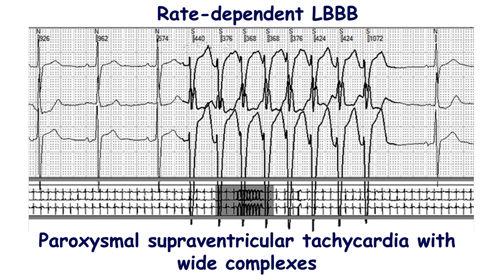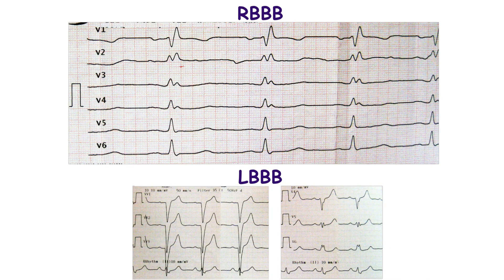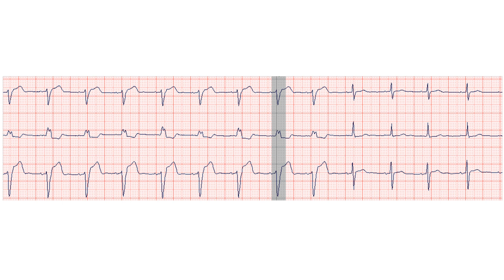It should be noted that bundle branch block may deteriorate heart failure because of asynchronic contraction of all walls of the ventricle. Lowering of heart rate may improve conduction via rate-dependent bundle branch block and thus improve the systolic function of the ventricles.